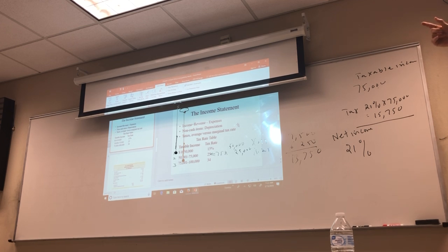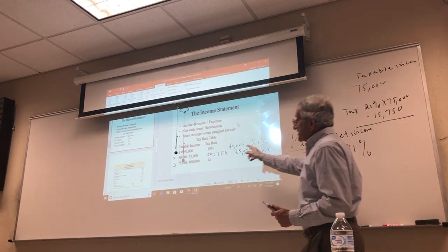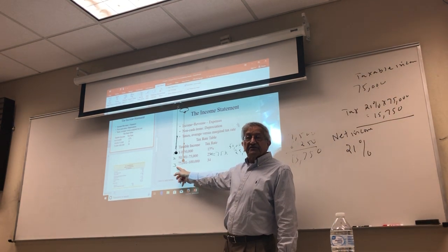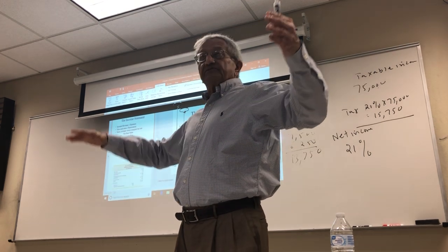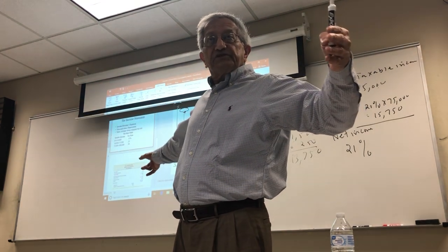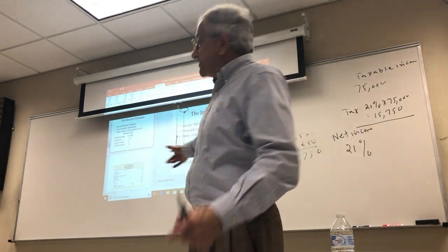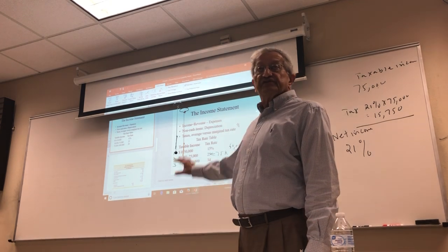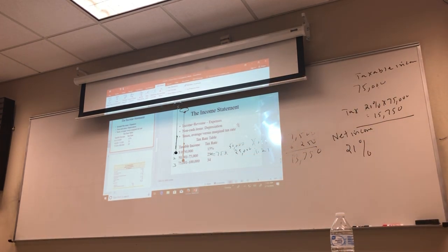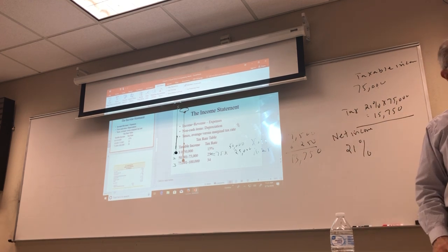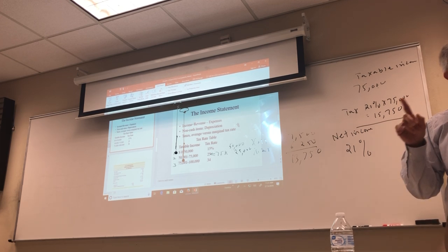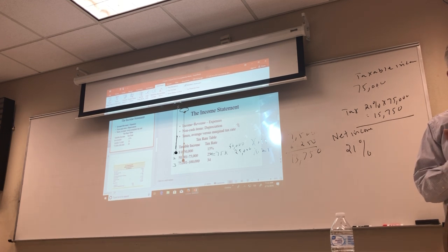Unlike the flat tax rate system where we just had to make one calculation, here we have to do multiple calculations depending on where your taxable income falls. If your taxable income is $100,000, you divide income into three parts: the lowest taxed at 15%, the middle at 25%, and the highest at 34%. The complete tax table has many more brackets than shown here.